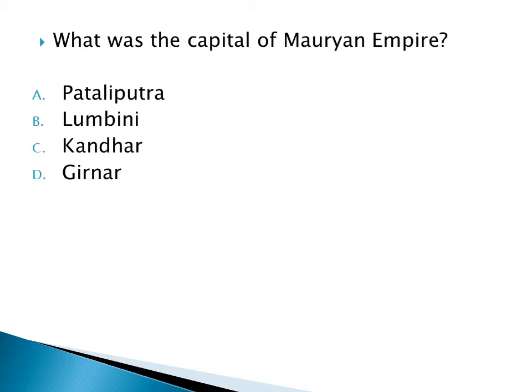What was the capital of the Mauryan Empire? Option A: Pataliputra, Option B: Lumbini, Option C: Kandar, Option D: Girnar. The right answer is Option A: Pataliputra.